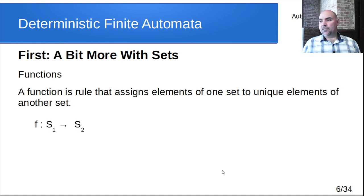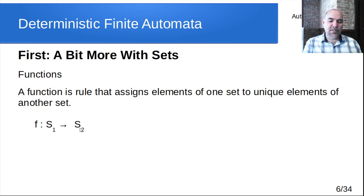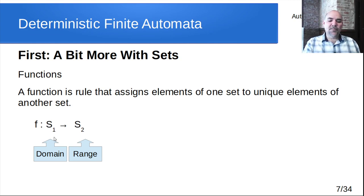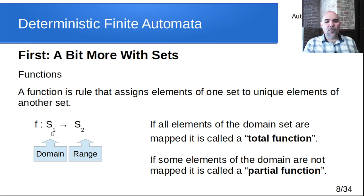Now let's talk about functions, because that's also going to be helpful today. A function is a rule or definition that assigns elements of one set to corresponding elements of another set. Importantly, the assignment must be unique — you can't have one element of S1 mapping to two different things. S1 is the domain set and S2 is the range set. If all elements of the domain are mapped to something in S2, it's called a total function. If some elements don't map to anything, it's a partial function.